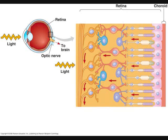The retina consists of an inner neural layer and an outer pigmented layer. The inner neural layer contains the photoreceptors, both rods and cones, that detect light, as well as the neurons that the photoreceptors stimulate in order to send signals to the brain. The outer pigmented layer, the pigmented epithelium, absorbs light to prevent visual echoes and also recycles retinal from the photoreceptors in the neural layer.